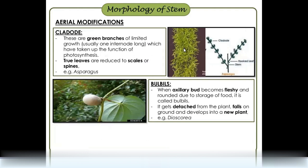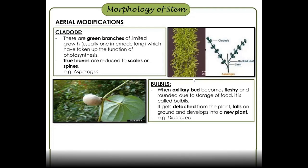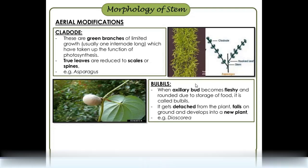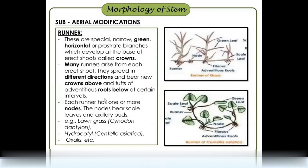The cladode refers to green branches. These are also seen in ornamental plants. Leaf spines are modified leaves; the branches are green branches. Asparagus is an example. Bulbils are axillary buds that are fleshy and round, storing food.